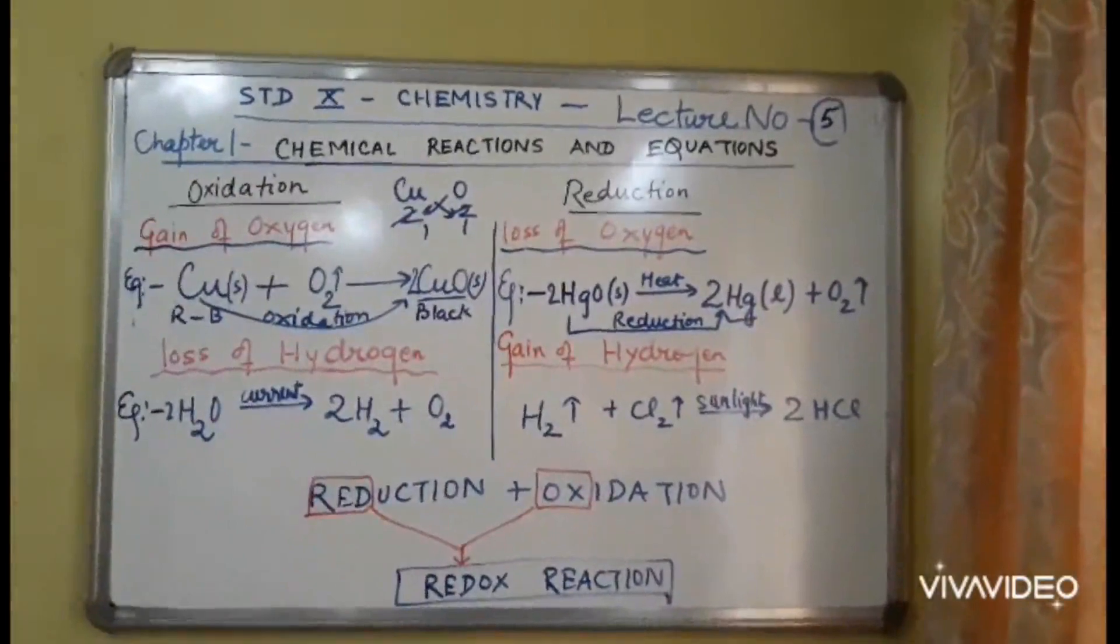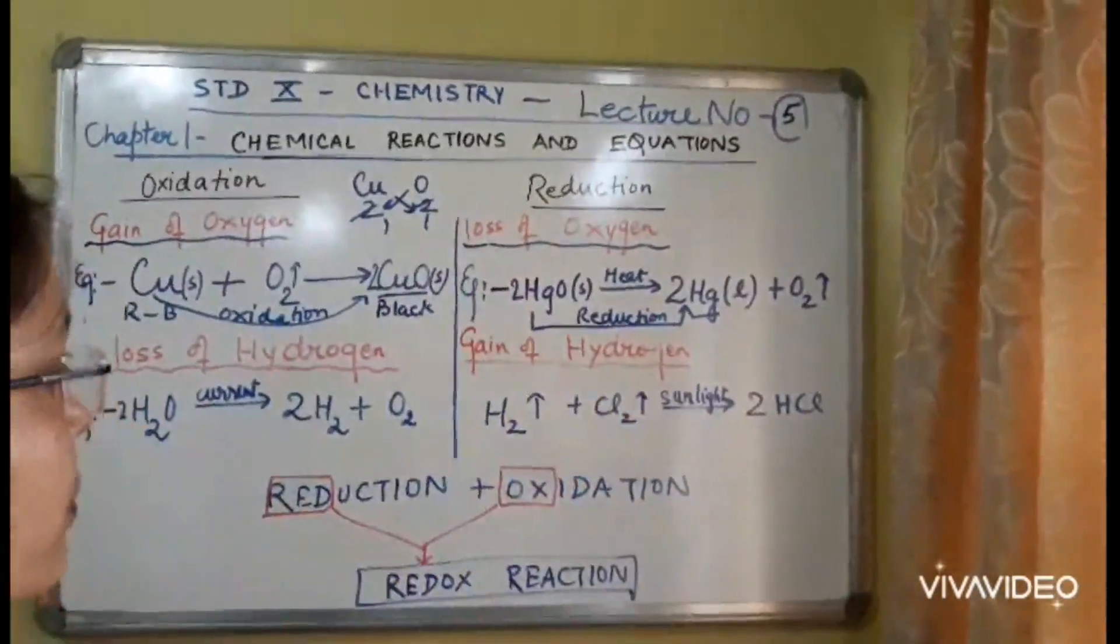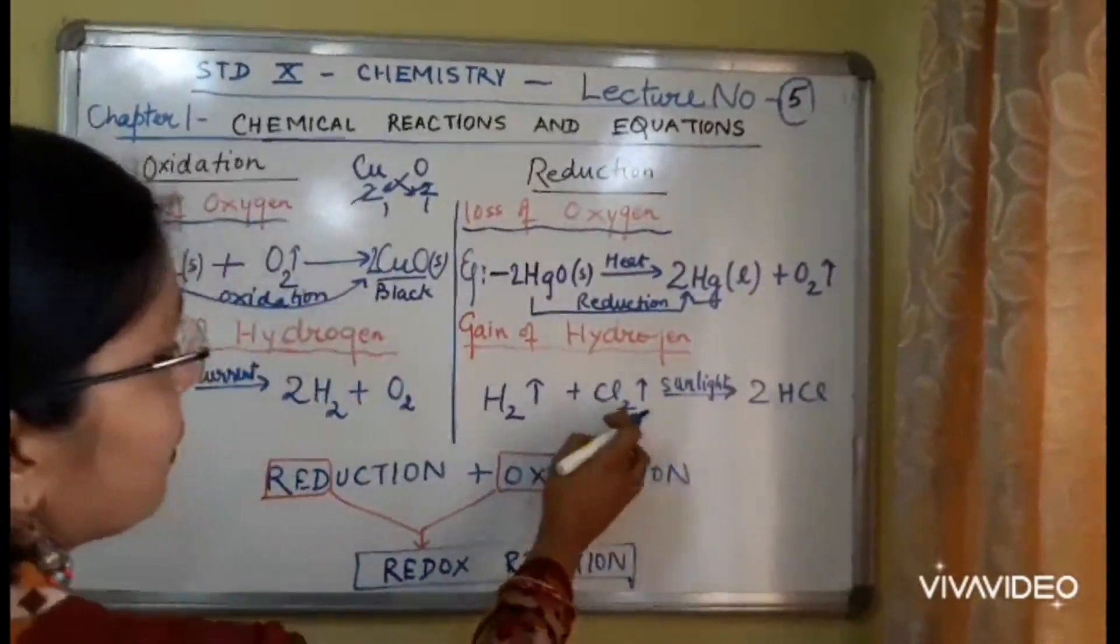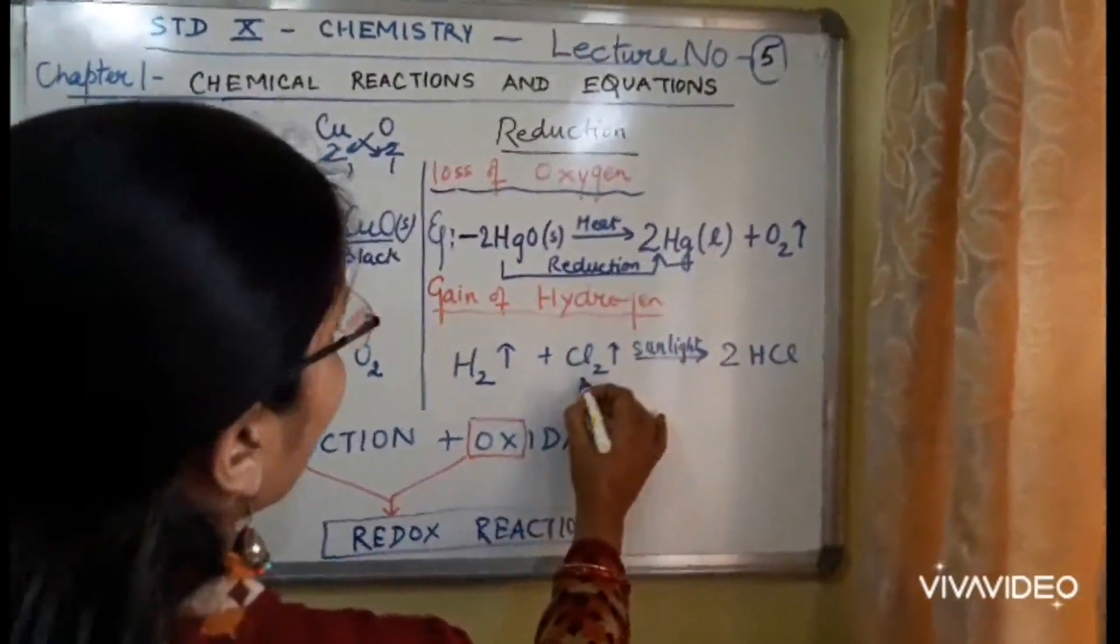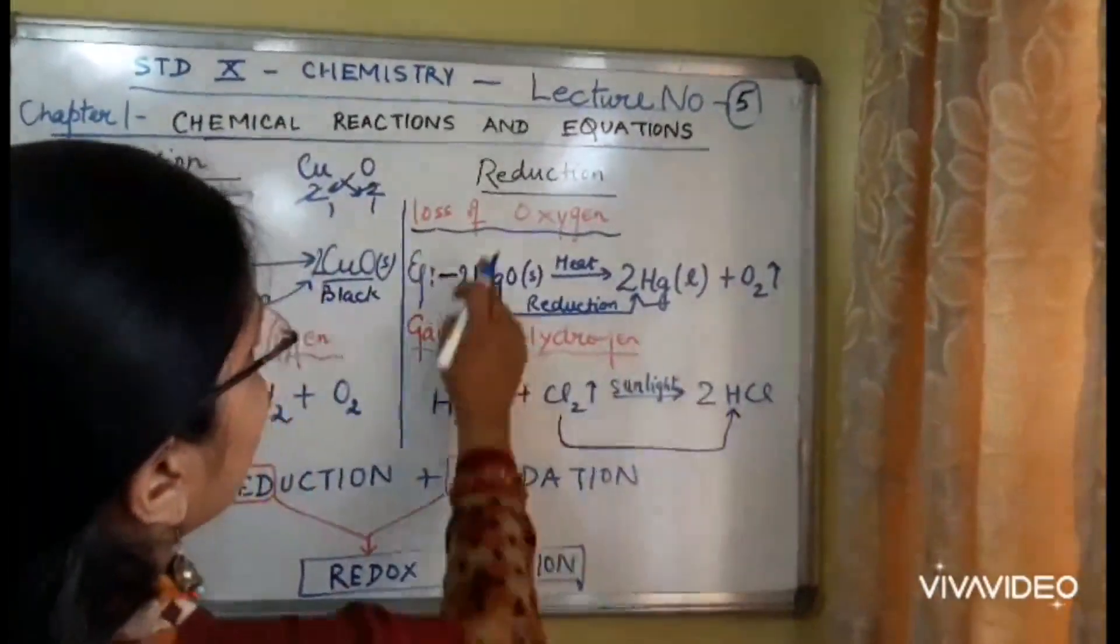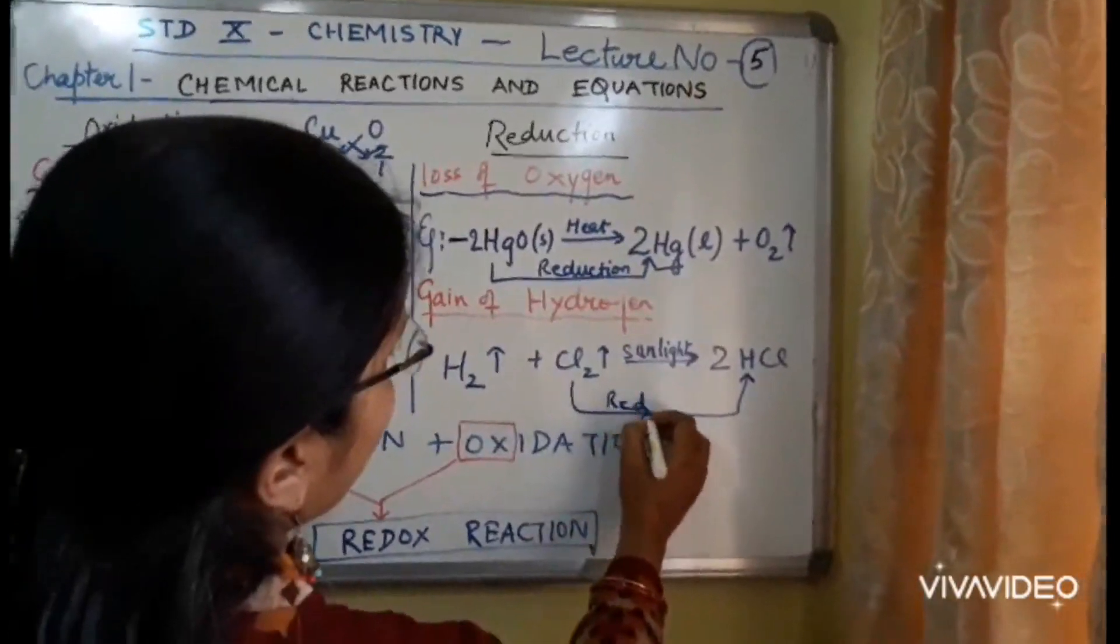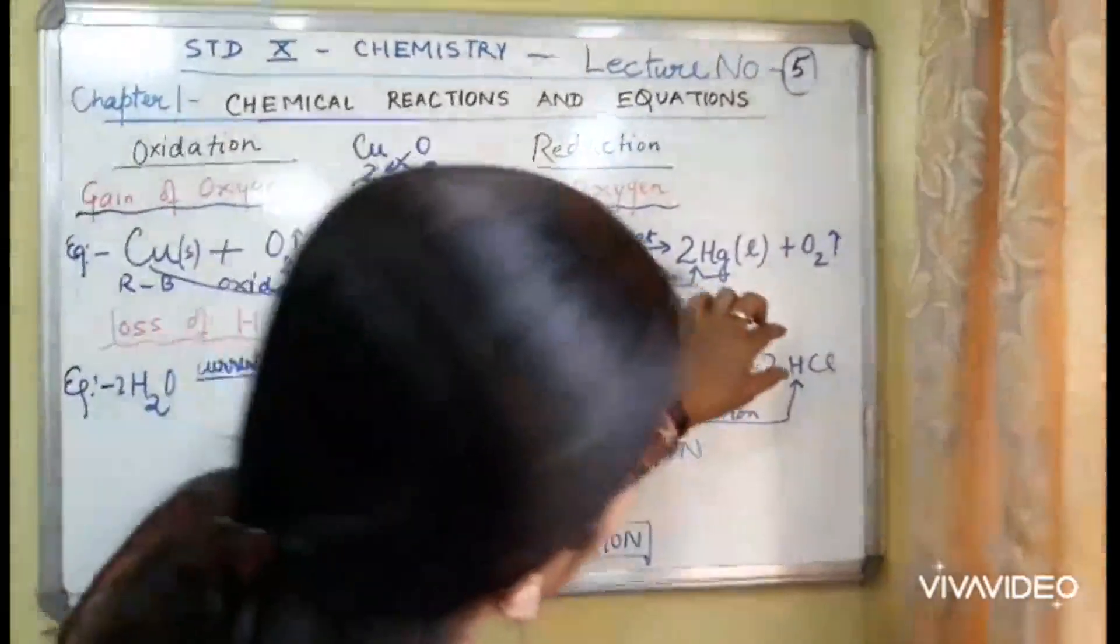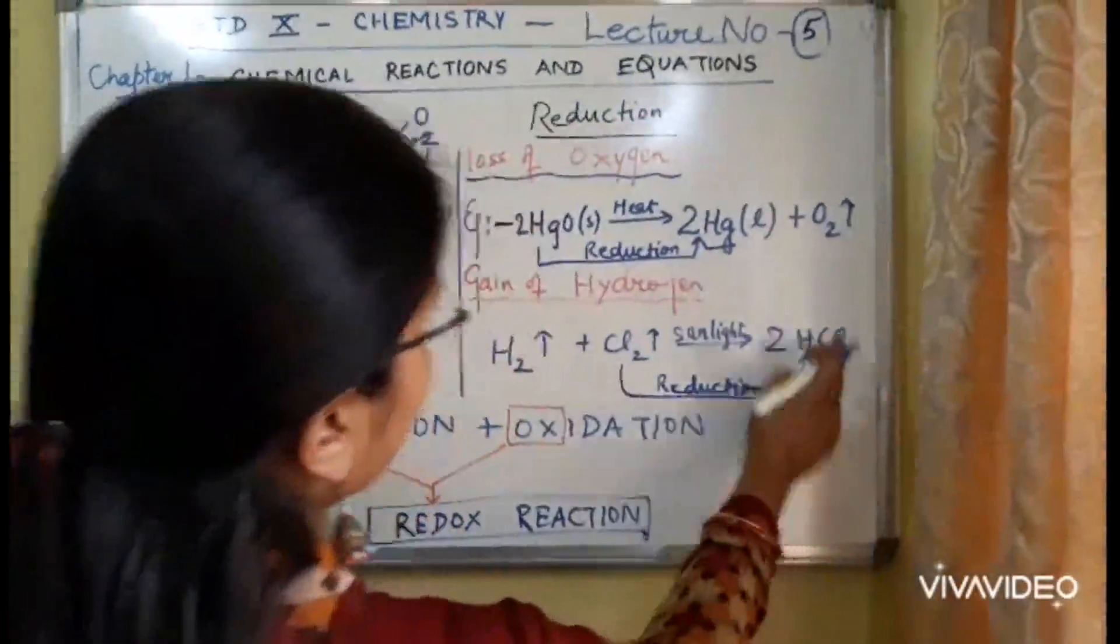Another method of understanding the difference is, reduction is gain of hydrogen. See here, chlorine. When it is reacted with hydrogen gas in presence of sunlight, chlorine changes to HCl. There is addition of H, gain of hydrogen. So this is reduction. I am not talking about H2. Chlorine is changing to HCl. So chlorine is reduced to HCl.